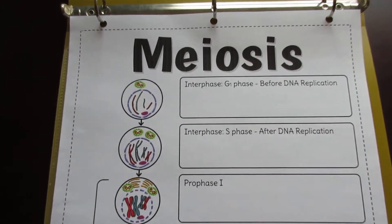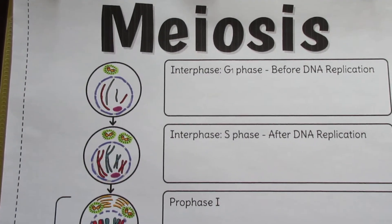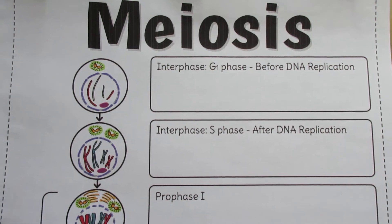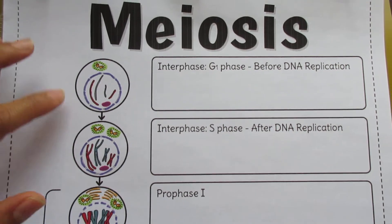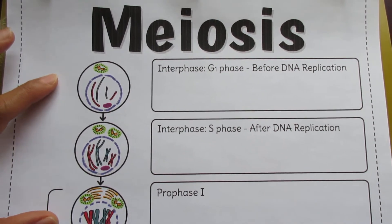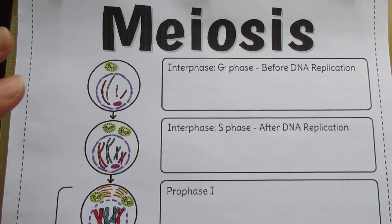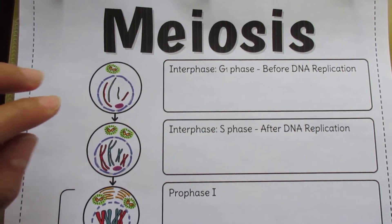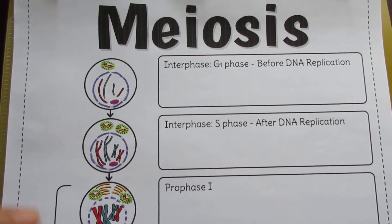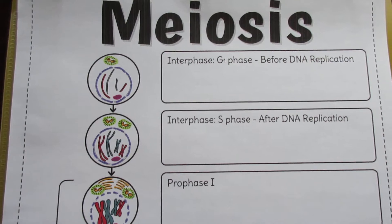I like to start off meiosis with interphase, so that students can tell the difference between duplicated chromosomes and unduplicated chromosomes, so they don't have the impression that DNA replication occurs in meiosis. It occurs before meiosis.